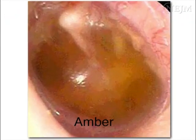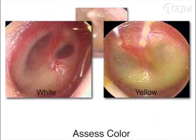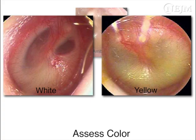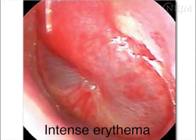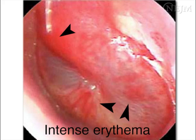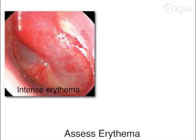Assess the color of the tympanic membrane. Although color alone is not diagnostic, an amber color usually indicates the presence of otitis media with effusion. White or yellow discoloration may be seen in both acute otitis media and otitis media with effusion. Look for areas of intense erythema on the tympanic membrane, a finding that indicates acute inflammation. When present together with opacification and bulging of the tympanic membrane, this finding supports the diagnosis of acute otitis media.